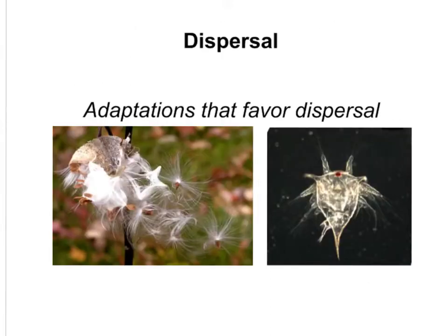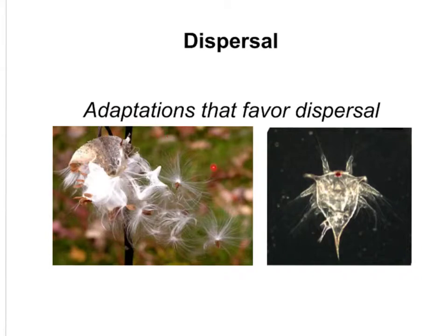Let's look at this idea of dispersal. Organisms can disperse, meaning they can move away from their current site or their normal range. Winged animals have great dispersal ability. This plant right here is a milkweed plant, and its seeds have tufts of fine hair on them that greatly favor dispersal on the wind. This is an adaptation that favors dispersal.